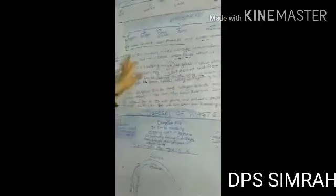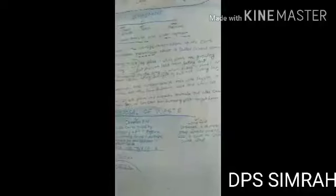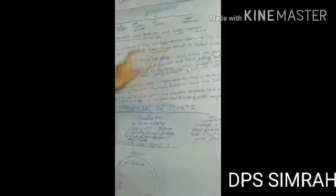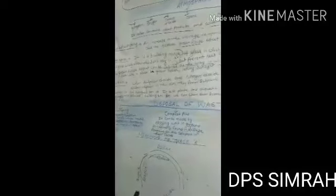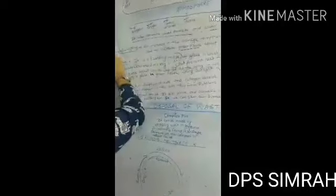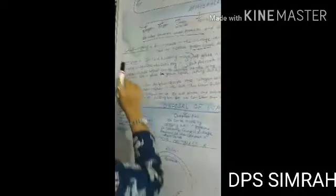Global warming is the rise in the average temperature of the earth due to the increased greenhouse effect. Before going to global warming, how does the greenhouse effect cause global warming? Due to the greenhouse effect, we are able to understand how it affects global warming.